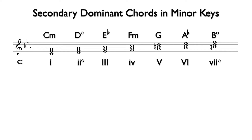Let's first notate the primary dominant chord. As a triad, this will be G major, but it could also include the addition of a minor 7th, making it a dominant 7th chord. The dominant chord in minor has an accidental on the 3rd, since that note is the leading tone to the key. The leading tone is an important note in a dominant chord that helps pull it back to the tonic chord. Since the primary dominant can be a triad or a 7th chord, I will put the 7th in parentheses.